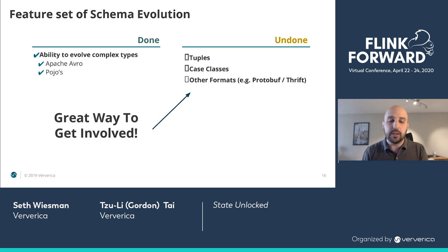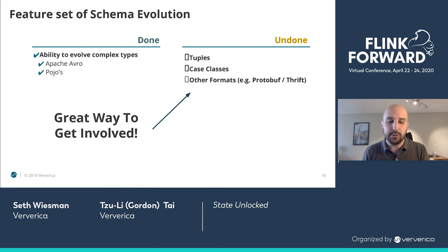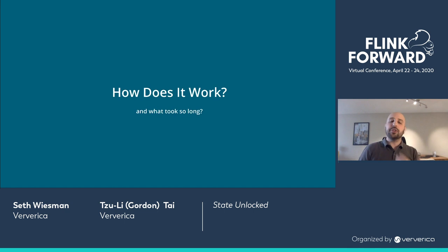These are really great ways to get involved with the project. Adding schema migration support for these different formats is a very self-contained change — you can get your hands dirty without having to concern yourself with the entire Flink runtime. It is a big project and can feel a little intimidating, but this is a specific change you can make. If that is something you are interested in, please reach out on the dev mailing list. I am incredibly confident there will be committers happy to help you get that change merged in.